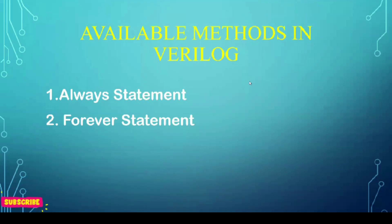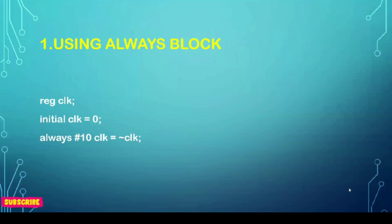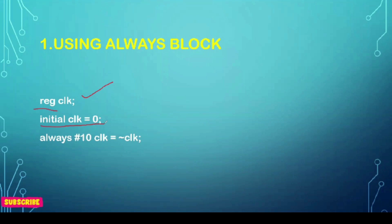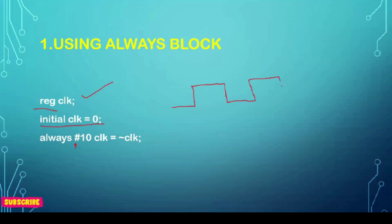Using the always block, you can see we declare clock as a reg type, because we are writing this code in the test bench. Initially the clock is set to zero. Then always #10 — where # is the delay operator — so after a delay of 10 time units, the clock is toggled. It goes from zero to one, and again after 10 time units it becomes zero, toggling every 10 time units. You can specify the units using the `timescale compiler directive.